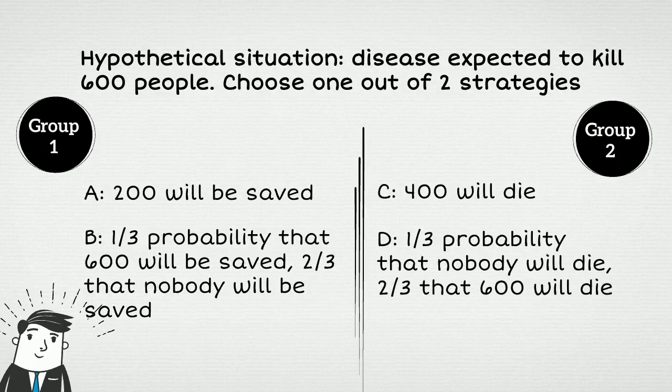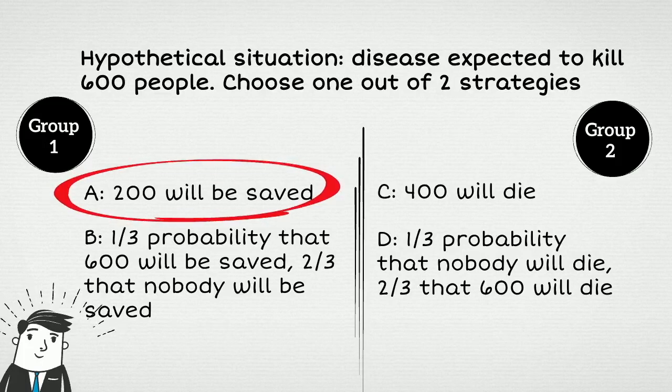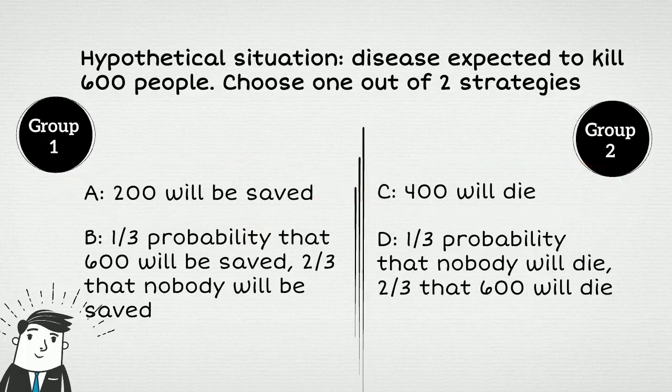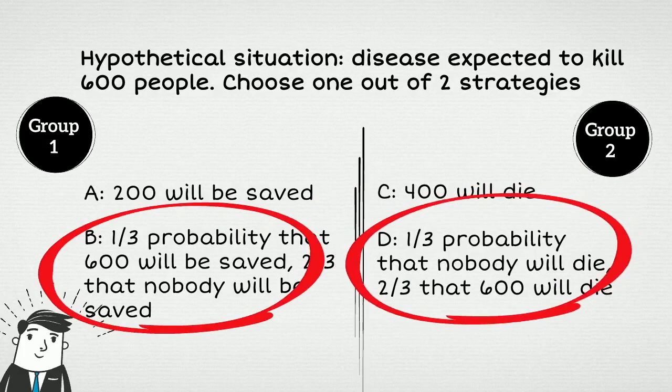Looking at these strategies, you notice that they are logically the same. If you expect the disease to kill 600 people, saying that 200 people will be saved is the same as saying that 400 people will die. So strategy A and C are logically the same. And one-third probability that 600 people will be saved is the same as two-thirds probability that nobody will die. So strategy B and strategy D are also logically identical.